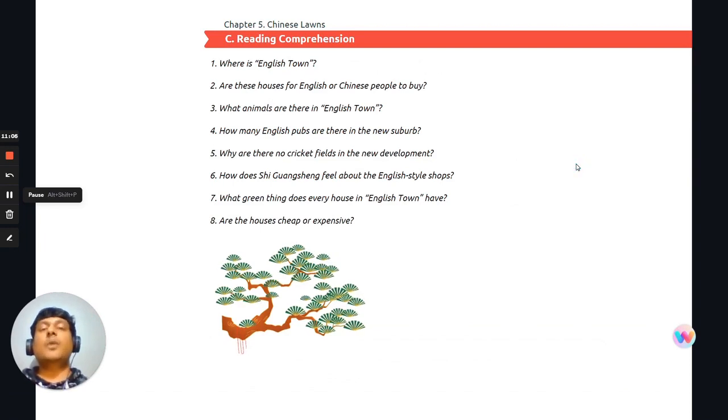Okay. Moving on to reading comprehension, C. I'm going to read through the questions, you will answer them, and I'm going to give you the answers. Number one, where is English town? Number two, are these houses for English or Chinese people to buy? Number three, what animals are there in English town? Number four, how many English pubs are there in the new suburb?